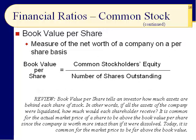Slide sixteen: book value per share. You take common stockholder's equity and divide it by the number of shares outstanding. That tells an investor how much assets back each share of stock — if all assets were liquidated and debts paid off, how much would each shareholder receive? It is common for the market price to be above book value, because the company is worth more intact than dissolved. Today it's very common for market price to be far above book value — think of a pizza shop: if you sold all its assets and paid off debts, you wouldn't have much left. It's the fact that the company is in business earning money that gives it its worth.